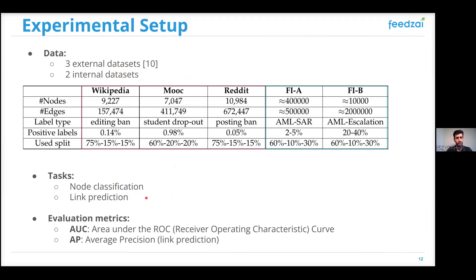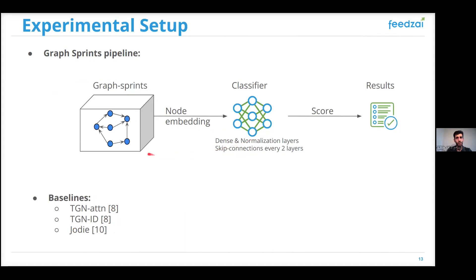About evaluation metrics, we use area under the ROC curve for both node classification and link prediction. And also for link prediction, we use one extra measure, which is average precision. And since Graph Sprints is a graph feature extraction engine that generates node embeddings, we need a classifier that uses the generated features and learns the task in hand. For this paper, we chose to use a neural network consisting of dense layers and normalization layers, and skip connections every two dense layers.